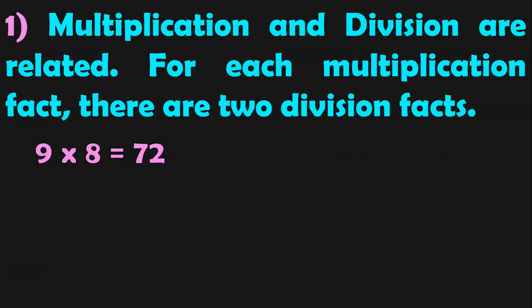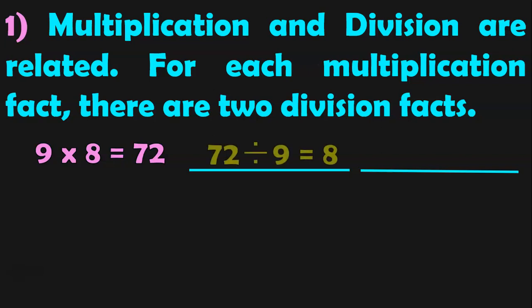9 into 8 is equal to 72 — this is the multiplication statement. The first division fact is: 72 divided by 9 is equal to 8. Here 72 is the dividend, 9 is the divisor, and since 9 into 8 is 72, the quotient is 8. The second division fact is: 72 divided by 8 is equal to 9. Here the dividend is 72, divisor is 8, and since 8 into 9 is 72, the quotient is 9. So those are the two division facts for one multiplication fact.